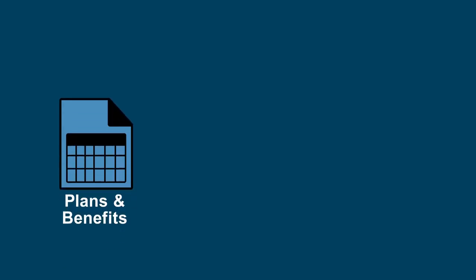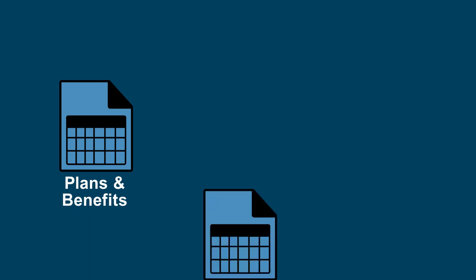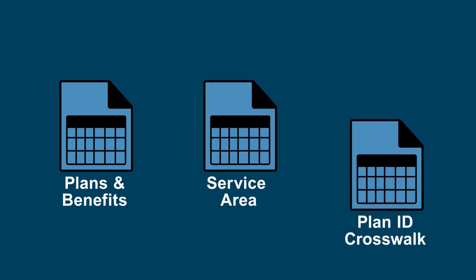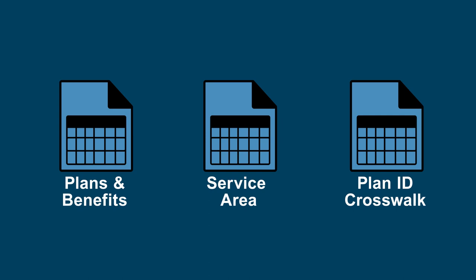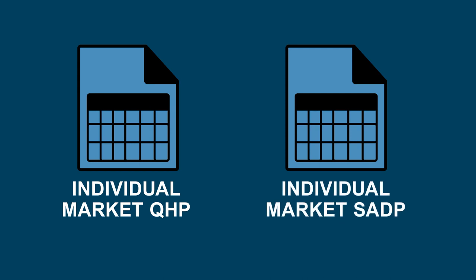To use the PlanID Crosswalk Tool, you'll need a populated version of the Plans and Benefits Template for the previous and current plan years, the Service Area Template for the previous and current plan years, and the PlanID Crosswalk Template. There are two types of PlanID Crosswalk Templates you may need to submit: an Individual Market QHP Crosswalk Template and an Individual Market Standalone Dental Plan (SADP) Crosswalk Template. Ensure that you have separate templates for each type of applicable plan offered.